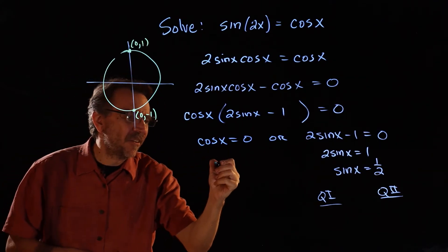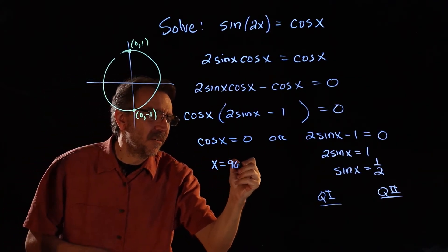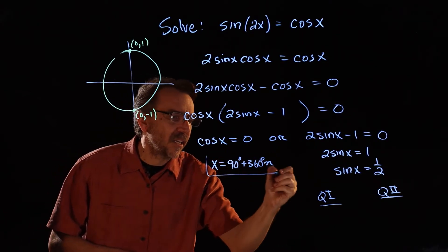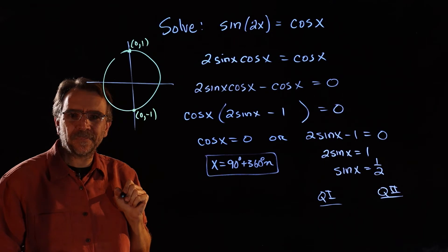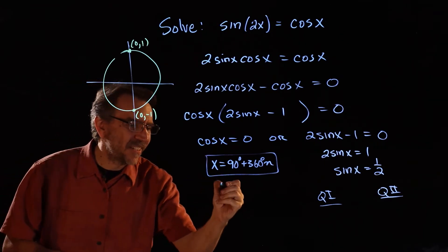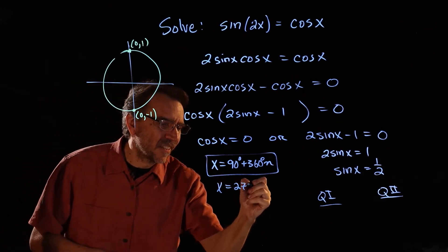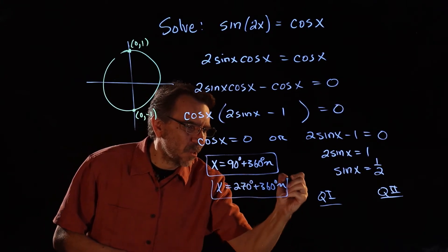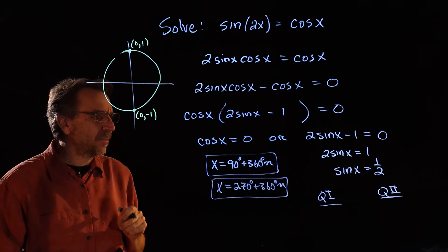So right here we know x is equal to 90 degrees, and then I'm just going to tack on 360 degrees times n and get all coterminal angles there. And then 270 degrees plus 360 degrees n, all coterminal angles there. Those are quadrantal.